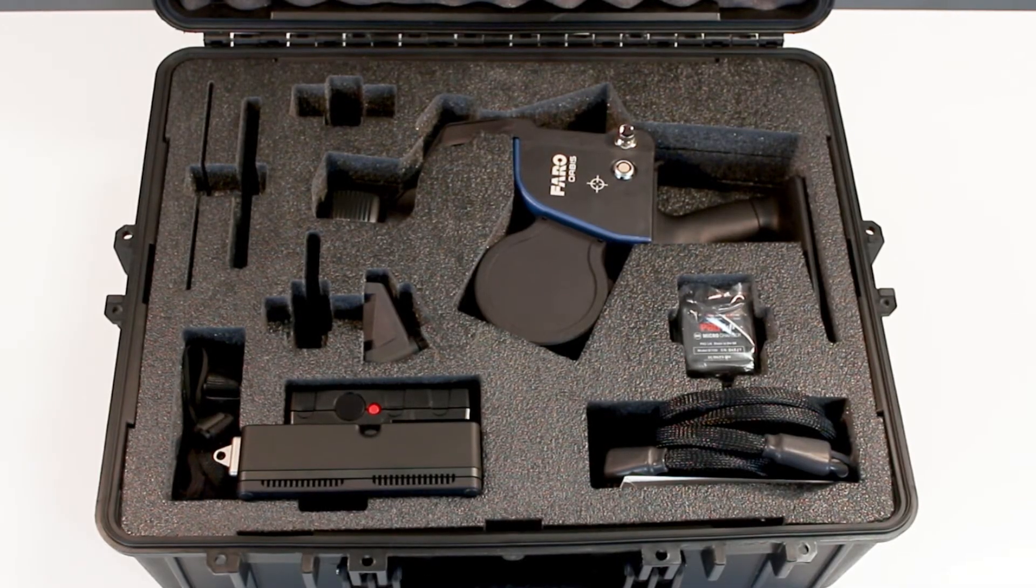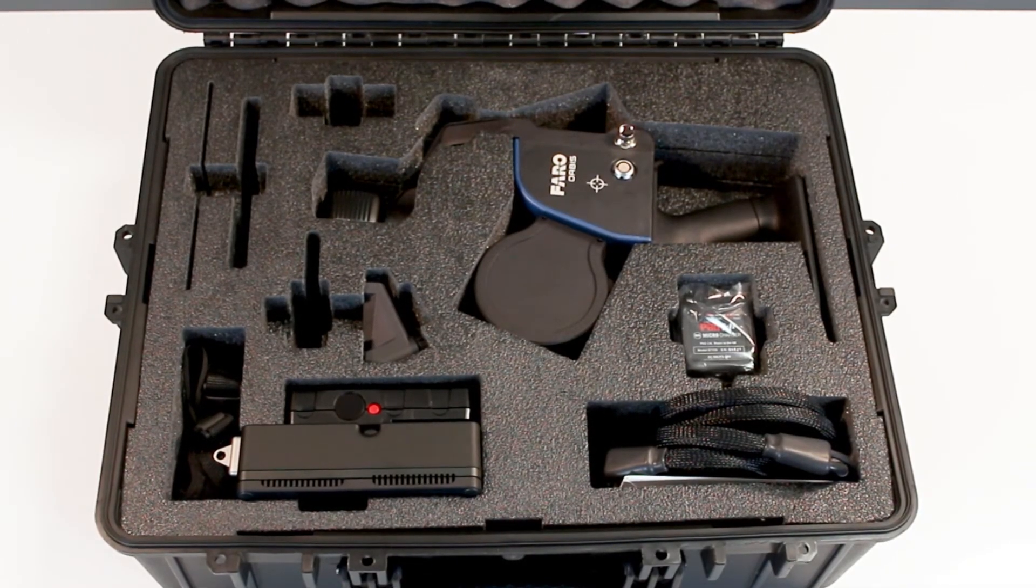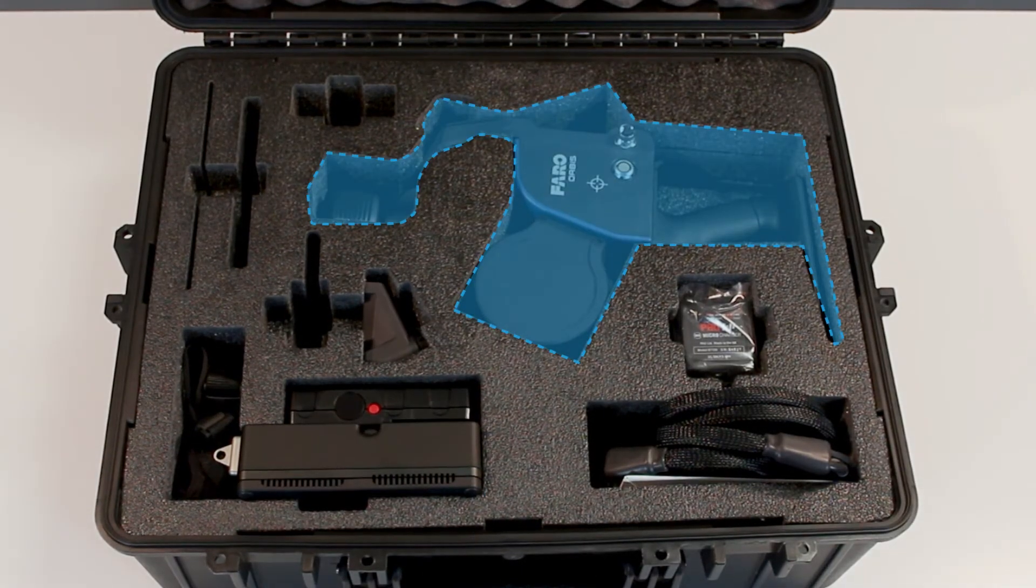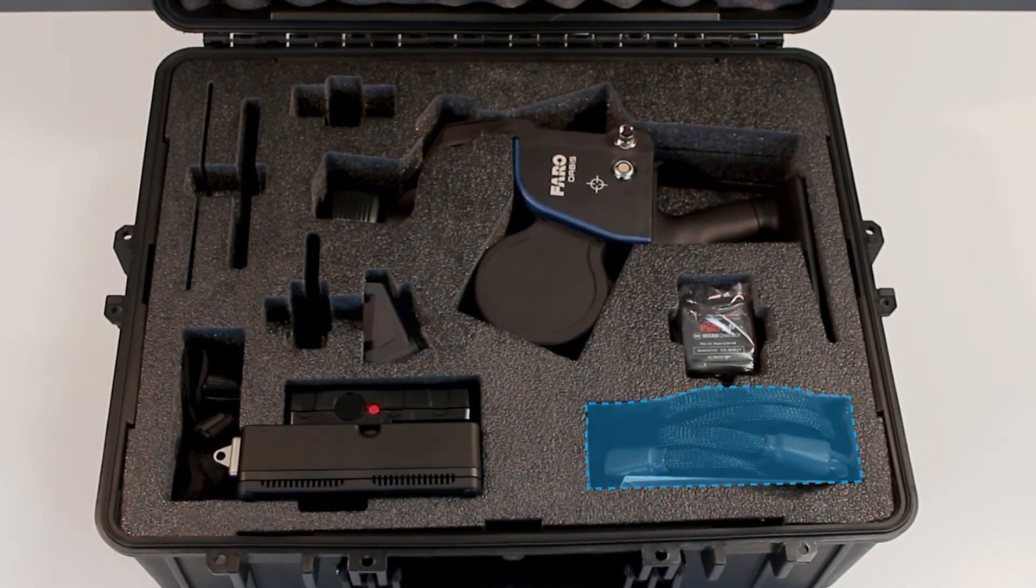Getting started with the Faro Orbis is very simple. All you need is your Orbis scanner, data logger with battery, main cable and phone mount.